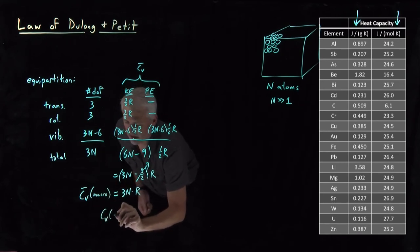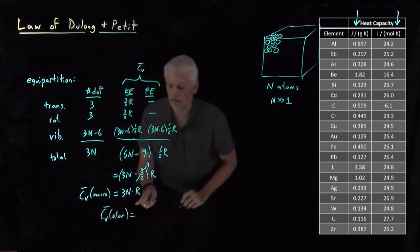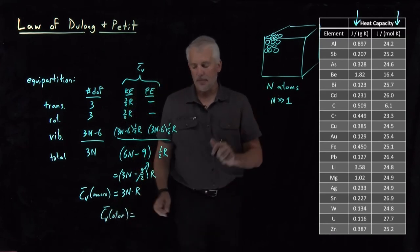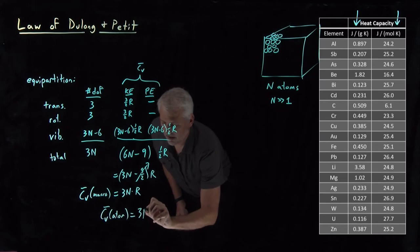the heat capacity of an individual atom. If I just divide by the number of atoms in the sample, that's going to give me 3R.